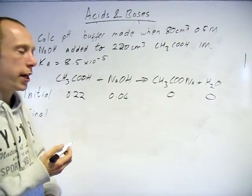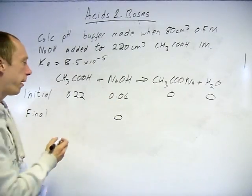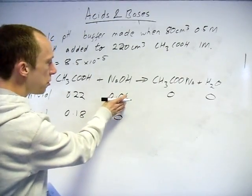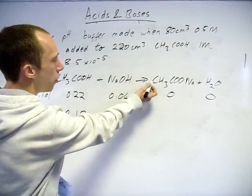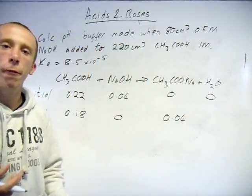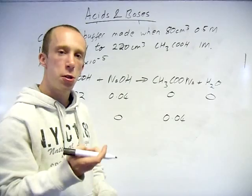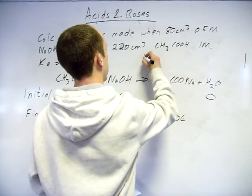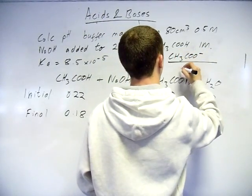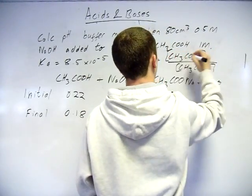When we mix them together, this will be looking at how many there are at the end. As you can see, it's a one-to-one ratio, so all of this is going to be used up reacting with that. We are going to take this value away from this. We will end up with 0.18. Because 0.04 of this have reacted - again, one-to-one ratio - we will form 0.04 of the salt across there. Once we've got these values, we need to know the concentrations.